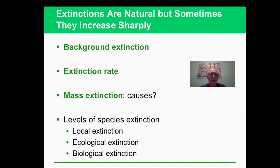Background extinction is the idea that extinctions are naturally happening and have happened all along. The question is what happens when a mass extinction comes in. It's hard to figure out exactly what's going on in the past because of incomplete fossil records, and also because some species exist in a very small area - so we may be wiping them out before we even knew they were there.